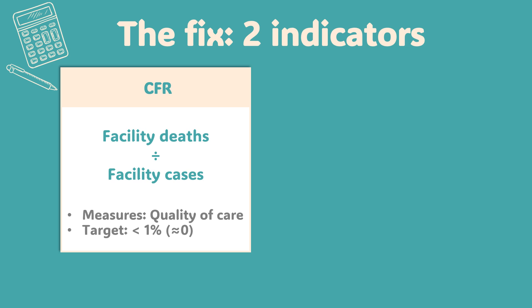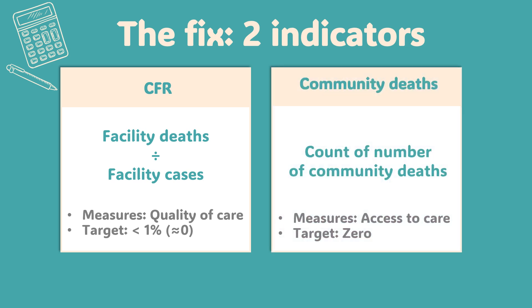The target for CFR is less than 1%, ideally close to zero, because with proper treatment, cholera deaths are almost entirely preventable. Indicator number two: number of community deaths. This is a count — not a ratio, not a percentage — just a simple, tragic count of deaths happening in the community, including anyone who arrived at a facility already dead. This number tells you nothing about quality of care; it tells you about access to care. Target: zero. Because any community death means someone couldn't or wouldn't reach care.